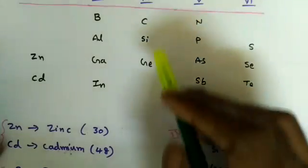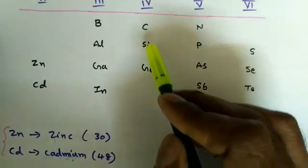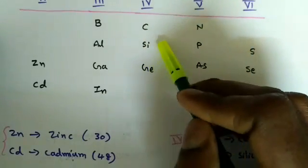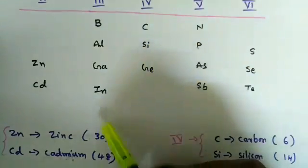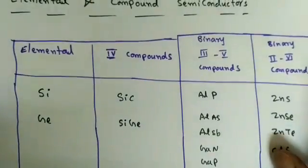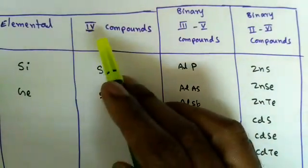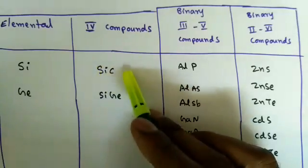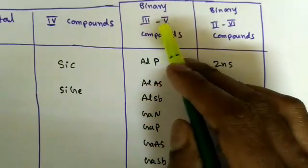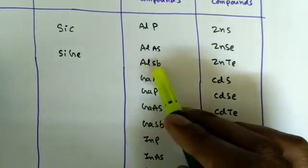Germanium and silicon are elemental semiconductors — a single species or single atom behaves like a semiconductor. For compound semiconductors, we combine two elements. Silicon carbide (Si-C) is a 4th group compound. We can also combine 3rd and 5th group elements, and 2nd and 6th group elements. Examples of 3rd–5th group compounds include aluminium phosphide, aluminium arsenide, aluminium antimonide, and gallium nitride.